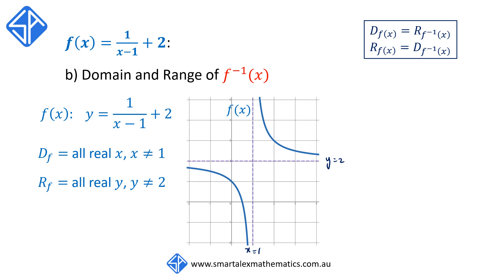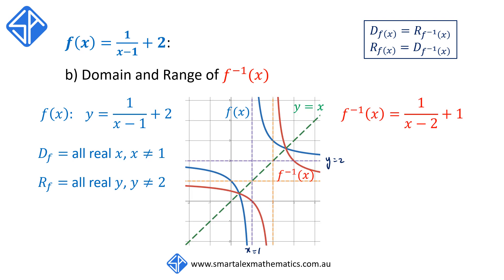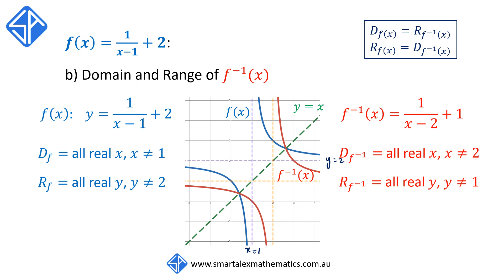For the inverse function f to the negative 1 of x, the graph is again symmetrical with the graph of f of x about the line y equals x. The domain of the inverse is all real x but x cannot equal 2, which connects to the range of f. And the range of the inverse is all real y except y cannot equal 1, which is the same as the domain of f.